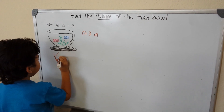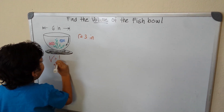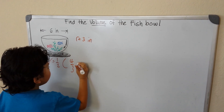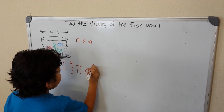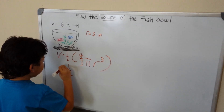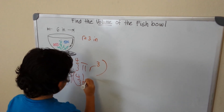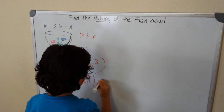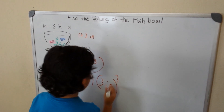I will go ahead and find my volume of the fishbowl. So my volume of the fishbowl is 1 half times 4 over 3 times pi times radius cubed. We copy the 1 half and put it in a bracket, then put 4 over 3, then put pi, and then put our radius — 3 inches cubed.